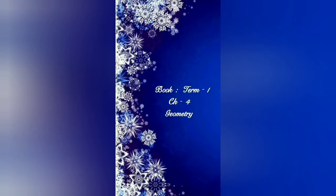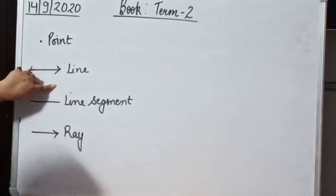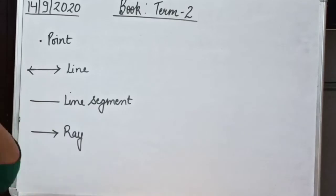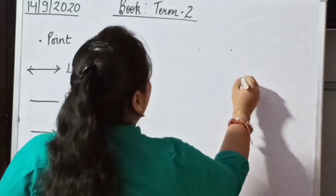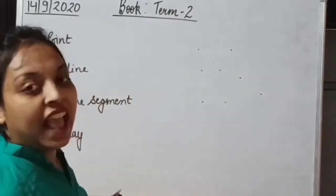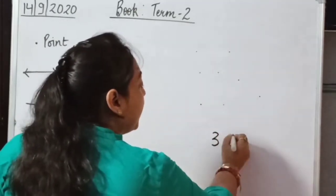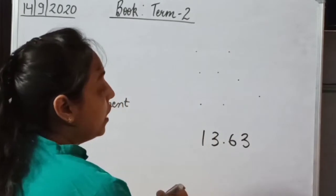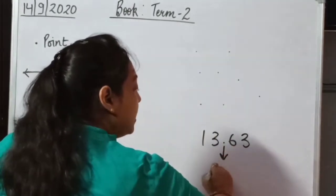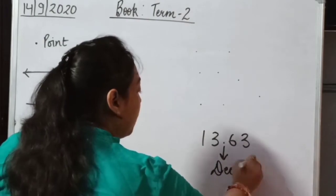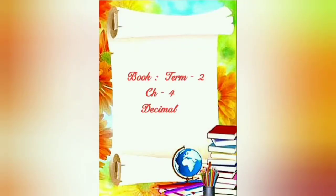Before starting the new chapter, we are going to revise chapter 4, Geometry from the book Term 1. In this chapter, we have studied about many geometrical concepts like point, line, line segment and ray. Now, a point used in between the digits in a number is known as a decimal. So today we are going to start chapter 4, Decimal from the book Term 2.